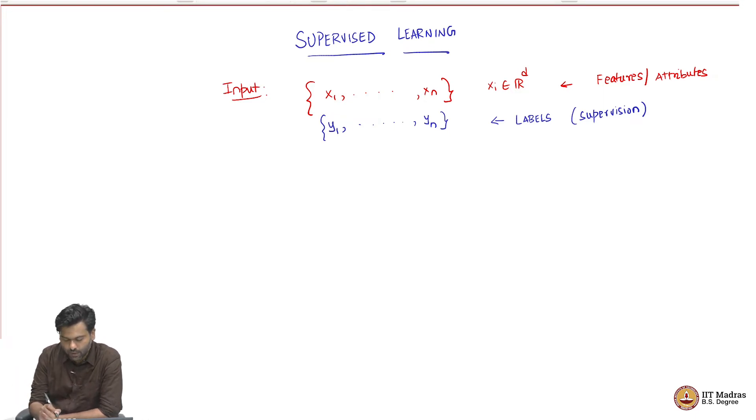Well, there are different types of values these labels can take and depending on that, we will have different types of supervised learning problems. If the labels take just two values, let us say they come from the set plus 1 or minus 1 or they come from the set 0 or 1, these are almost equivalent most of the times for us. When this happens, such a problem is called as a binary classification problem.